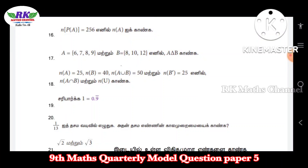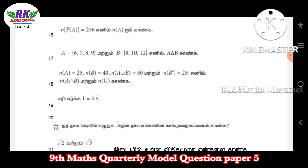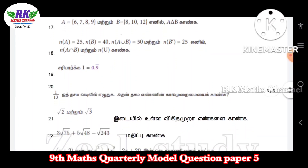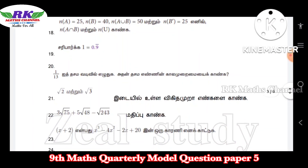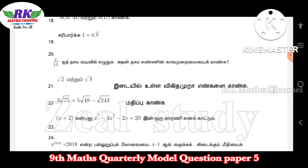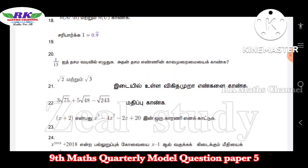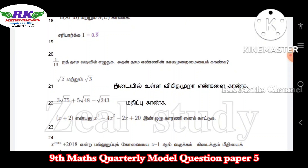Question number 19: 1 equals 0.9 bar — that is 0.9 bar — you can get the answer is 1, let us prove it. Next question 20: 1 by 13, that means find the decimal number by doing 1 divided by 13. Next, question number 21.